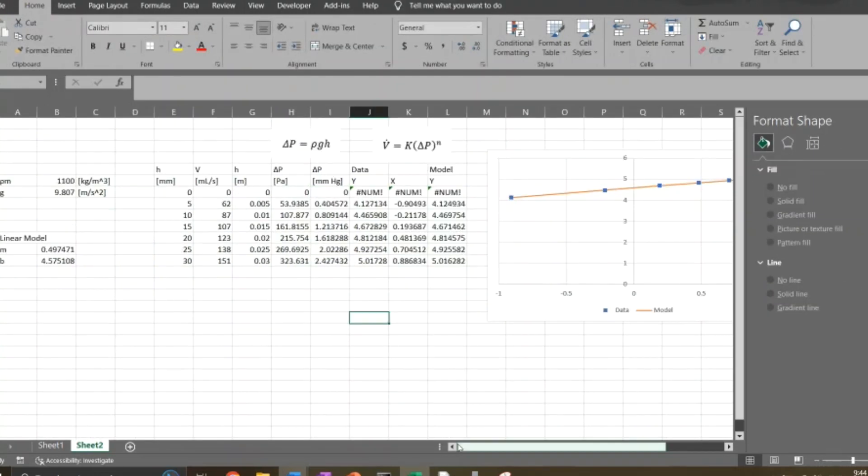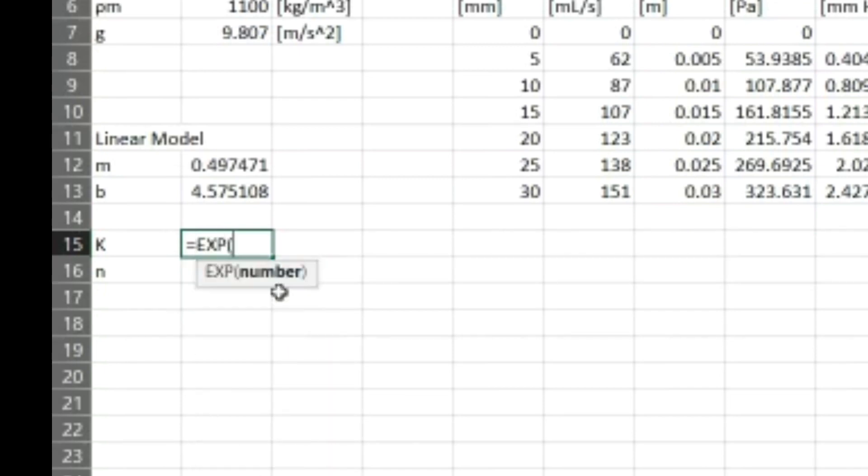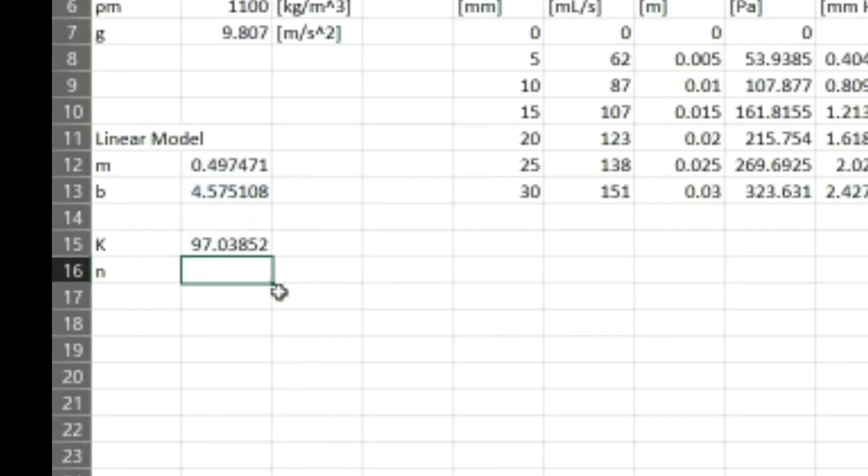Let's add a legend to the bottom so you can see that better. So we've got our data and we've got our model. And they match pretty well. So now, finally we need to calculate what K and N are. So we know from our model before that B is equal to the natural log of K. So if we take the exponent of B, that is what K is. And N is equal to M. So that is what N equals. So those are the parameters that they asked us to define in part B. Great. So that's it for part B.